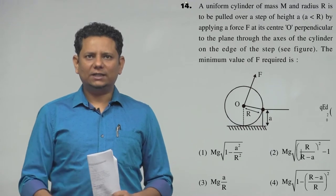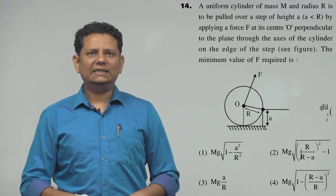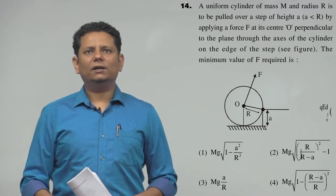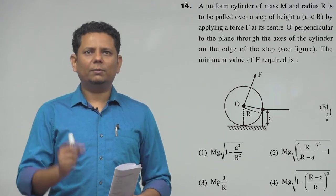Next question: A uniform slender of mass capital M and radius R is to be pulled over a step of height A by applying a force F at its center O perpendicular to the plane through the axis of the slender on the edge of the step.